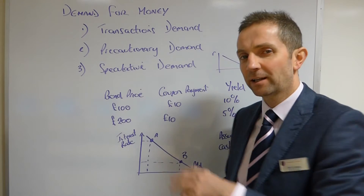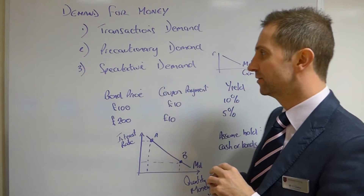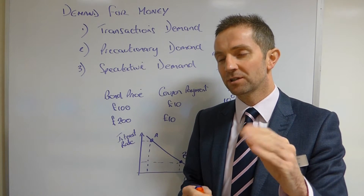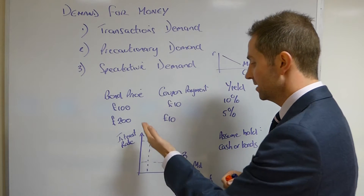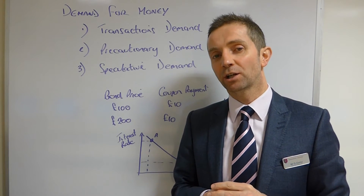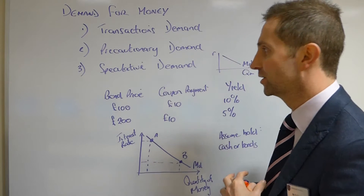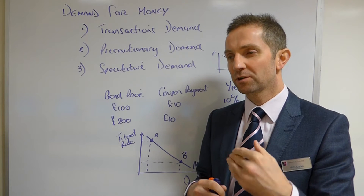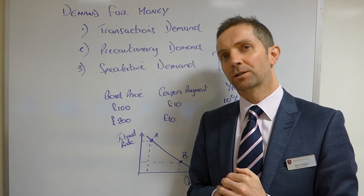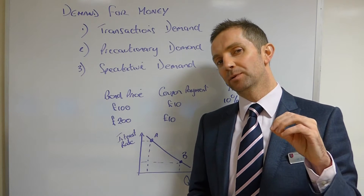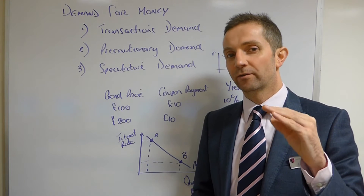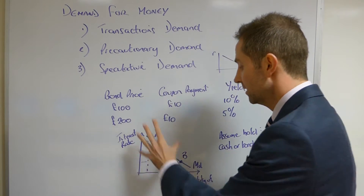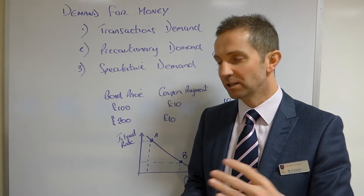And then we have thirdly the speculative demand. Now the speculative demand for money is the demand I really want you to focus on today, because this really determines the reason why the money demand curve slopes downwards from left to right. You'll have come across this term before with regard to speculators when considering, for example, the exchange rate and people trying to make money from appreciations and depreciations in a currency. Well, the same thing can be applied to the money demand curve — the money demand schedule.